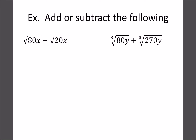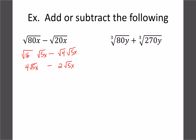For examples with variables, the same rules apply. Break root 80x into 16 and 5 — the x can't be square-rooted so it stays inside — giving 4 root 5x. For the second term, 20x divided by 5x gives 4, a perfect square, so we get 2 root 5x. Then 4 minus 2 equals 2, giving the answer 2 root 5x.